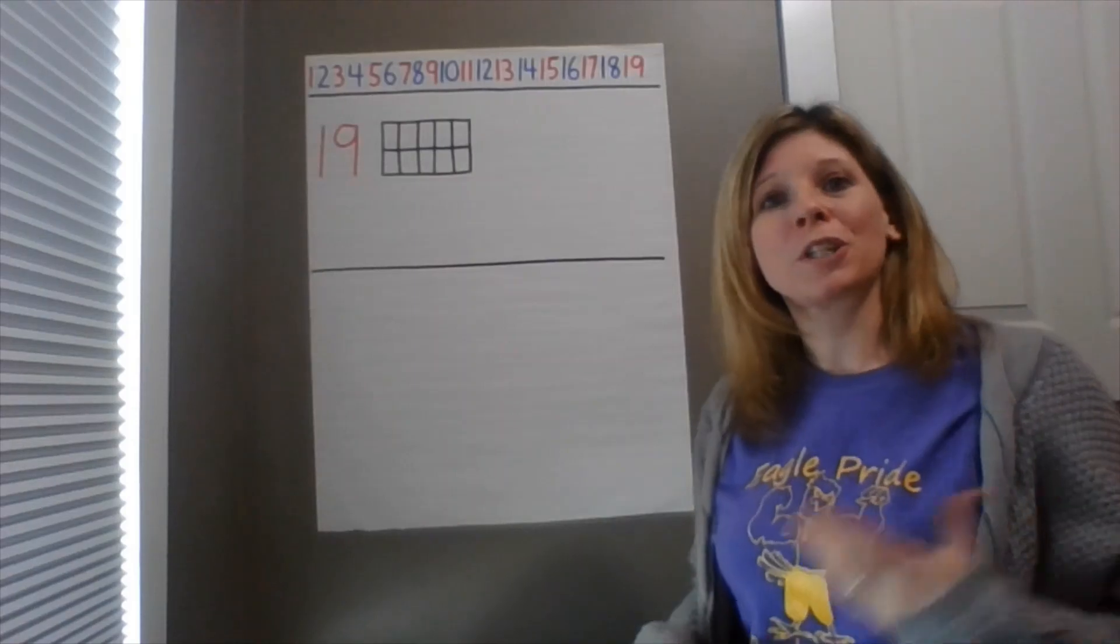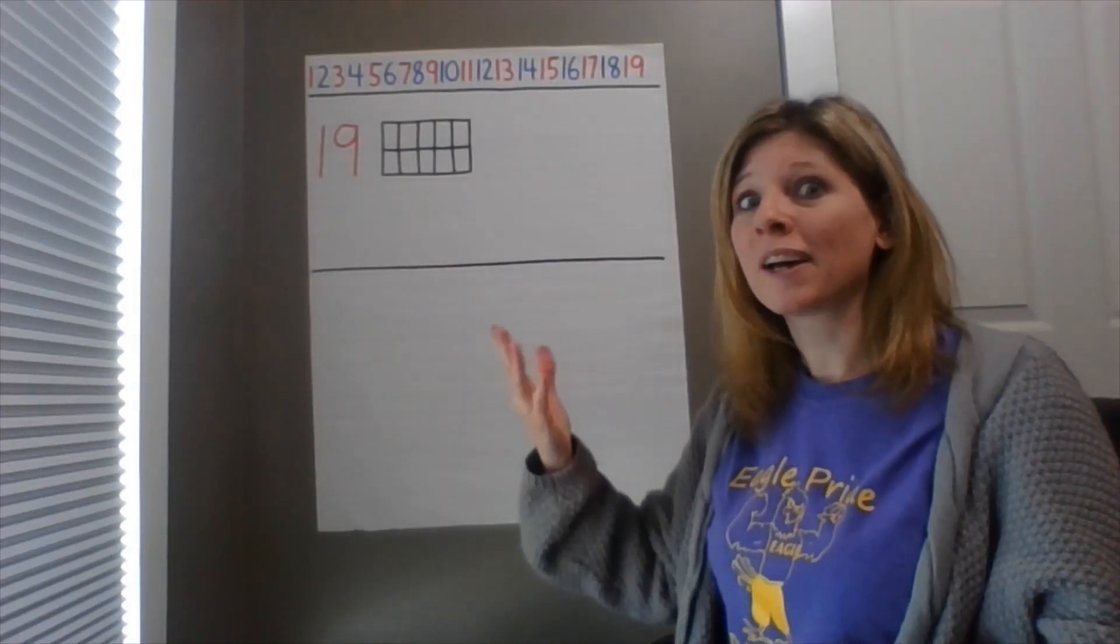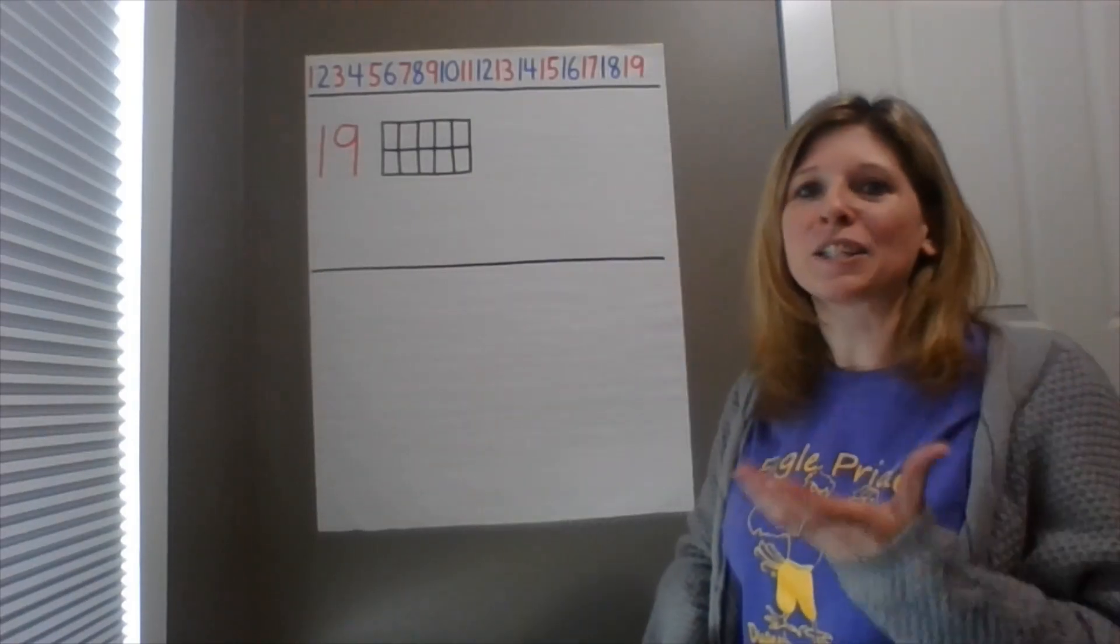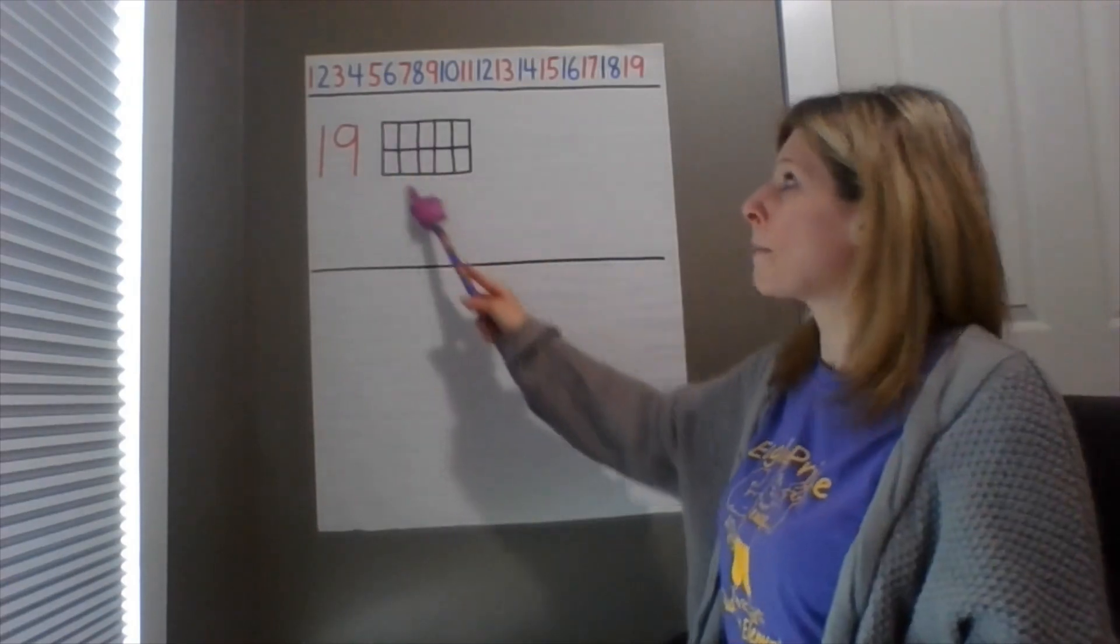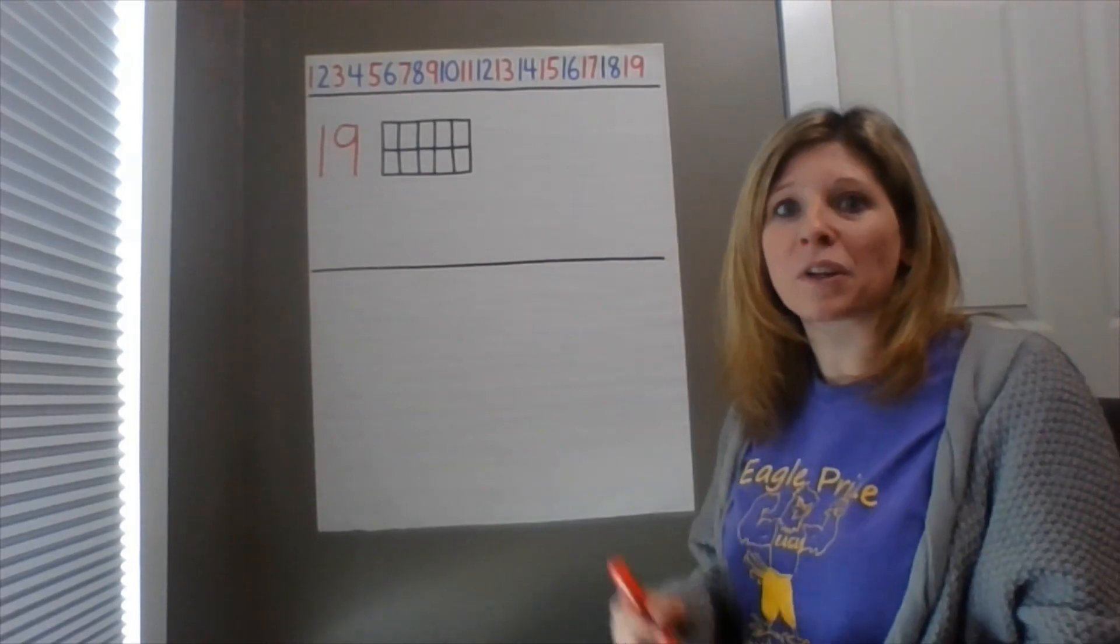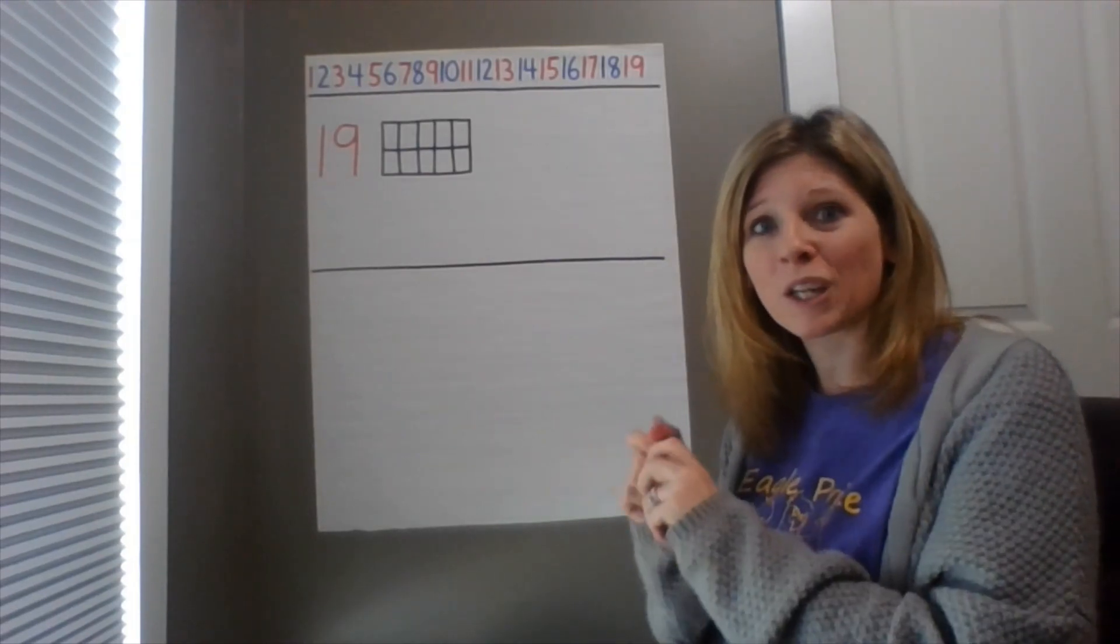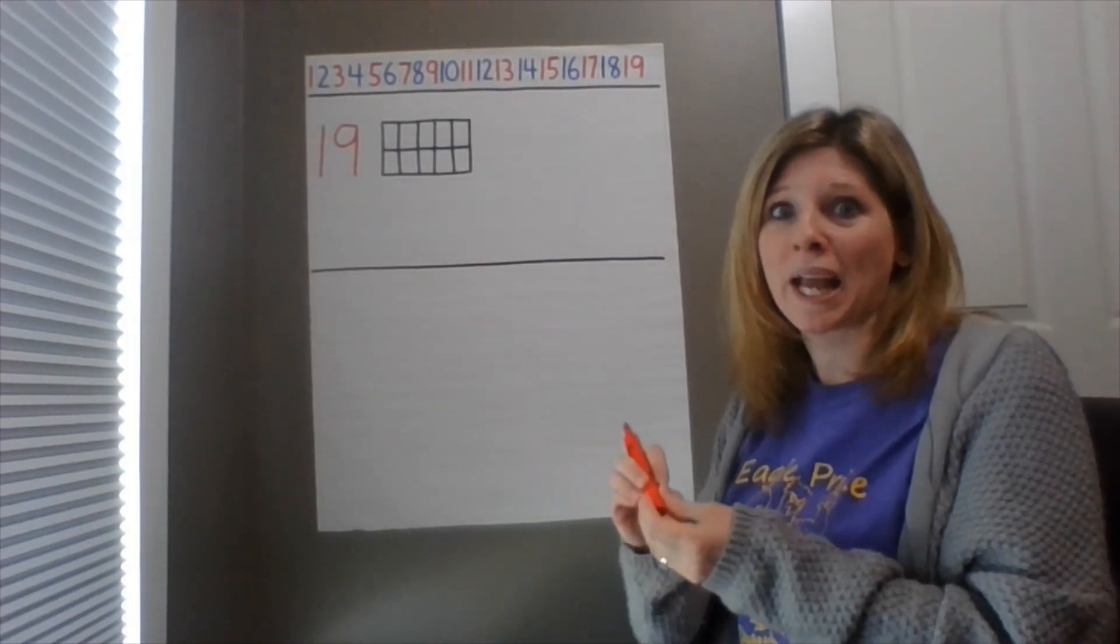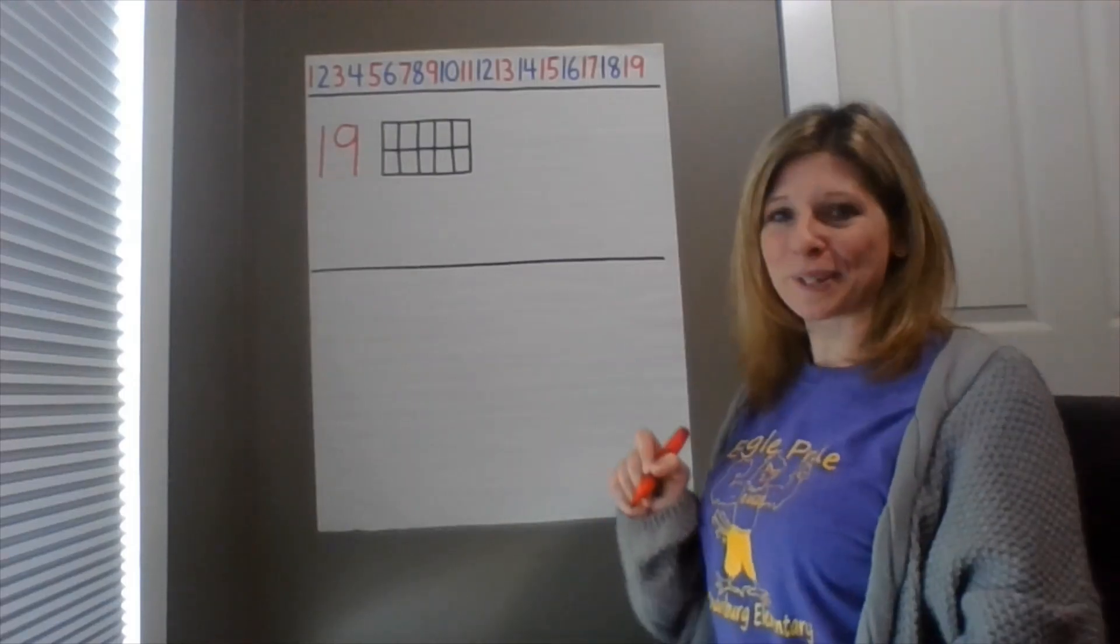Excellent. So we know that our teen numbers are a group of 10 and then some more. So I'm going to start by filling in my 10 frame. Right now it's empty. So you need to use your objects and fill in your 10 frame as I'm filling in my 10 frame with my counters. Okay, here we go.